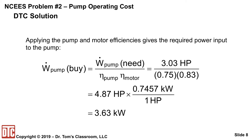What we need to buy is a bigger pump, because we have a pump efficiency of 75% and a motor efficiency of 83%. Dividing that into the 3 horsepower, you get almost 5 horsepower. Since the cost calculation is in kilowatts, we need to convert from horsepower (US units) to kilowatts (SI units), and we get 3.63 kilowatts needed for the pump.